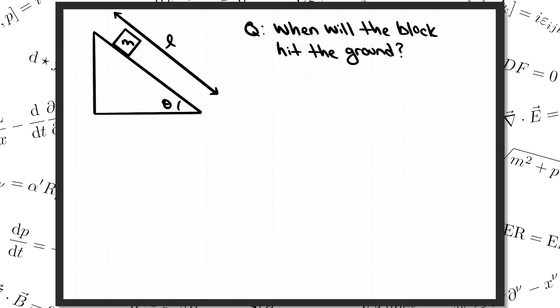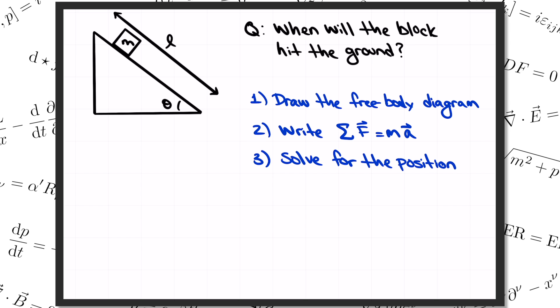In Newtonian mechanics, we follow a three-step procedure to try to answer these kinds of questions. Step one is to draw the free body diagram. This is just a picture that shows all of the forces that are acting on the mass. In step two, we add up all of those forces and write F equals ma. Finally, in step three, we solve F equals ma to determine the position as a function of time.